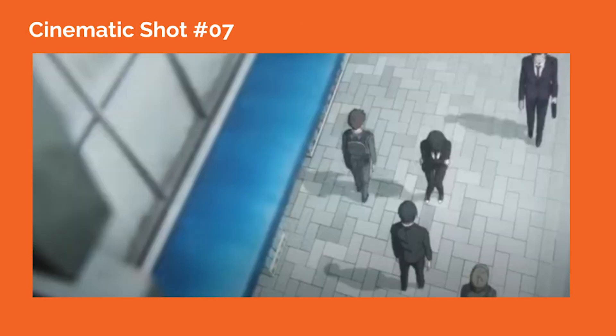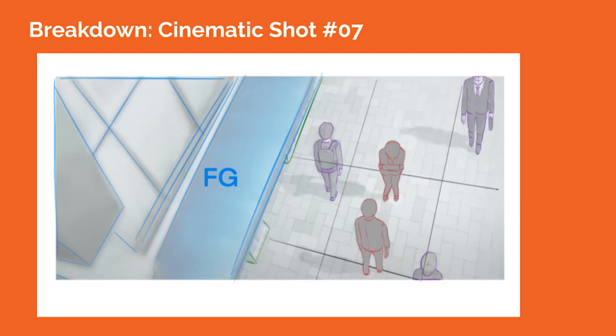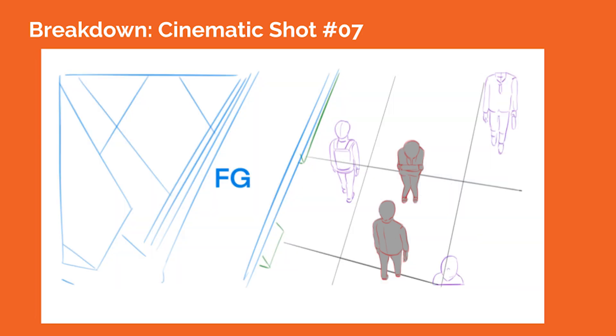In cinematic shot number seven, the camera is high above the ground, looking down at two of our group members on the sidewalk. We can sense the three-point perspective grid from the perspective cues formed by the architectural elements in the foreground on screen left. The formation of the tiles on the ground clue us into the orientation of the ground plane.